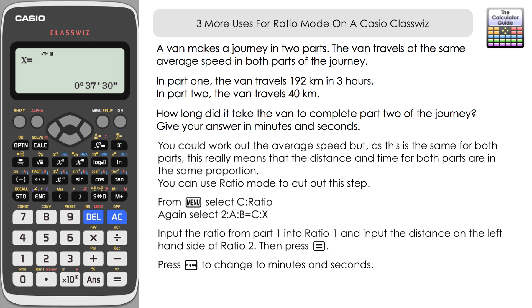If you press that here, then we'll get our answer. The way to read this is zero hours, 37 minutes, 30 seconds. So that means that the journey took 37 minutes and 30 seconds. So straight away, we've converted that to minutes and seconds without too much effort.